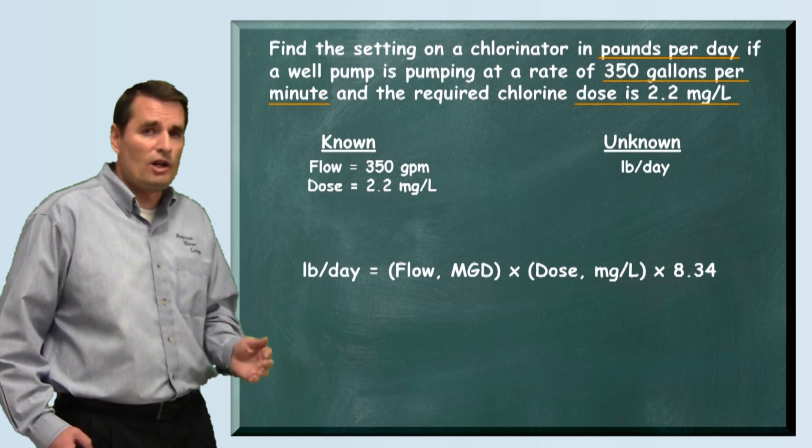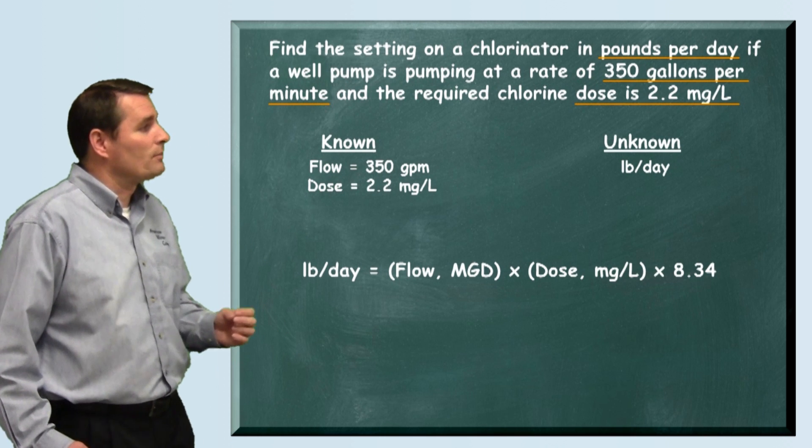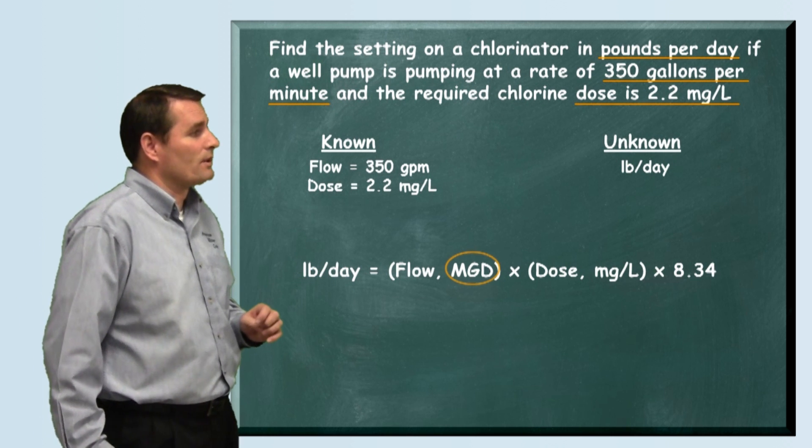Pounds per day equals flow in million gallons per day or MGD multiplied times the dose in milligrams per liter times our conversion of 8.34.